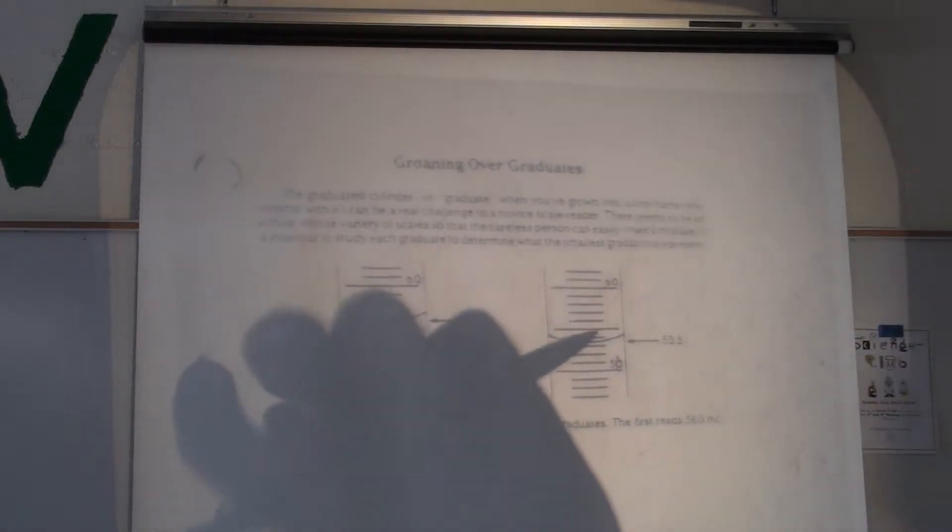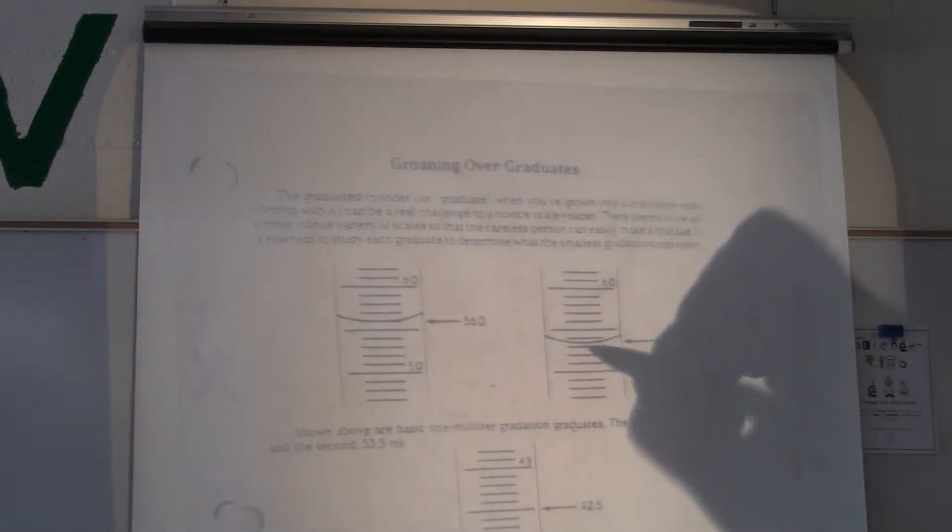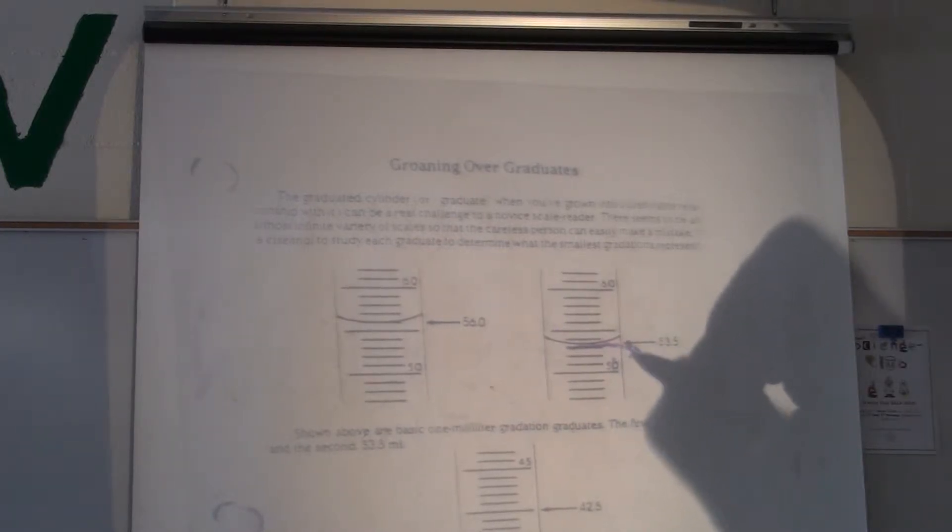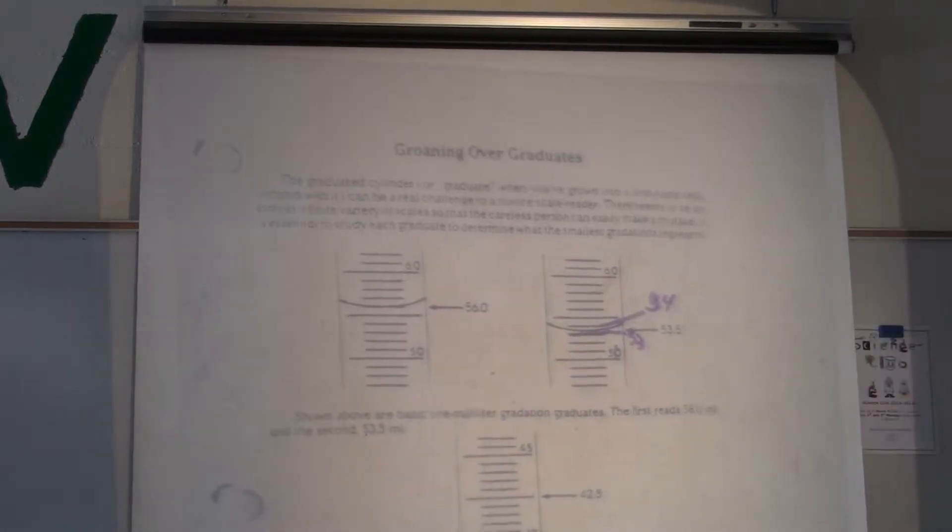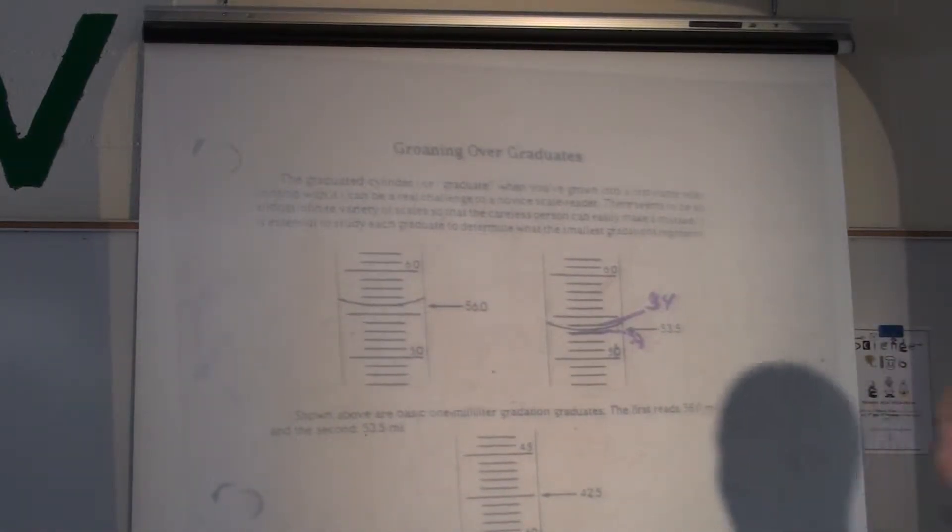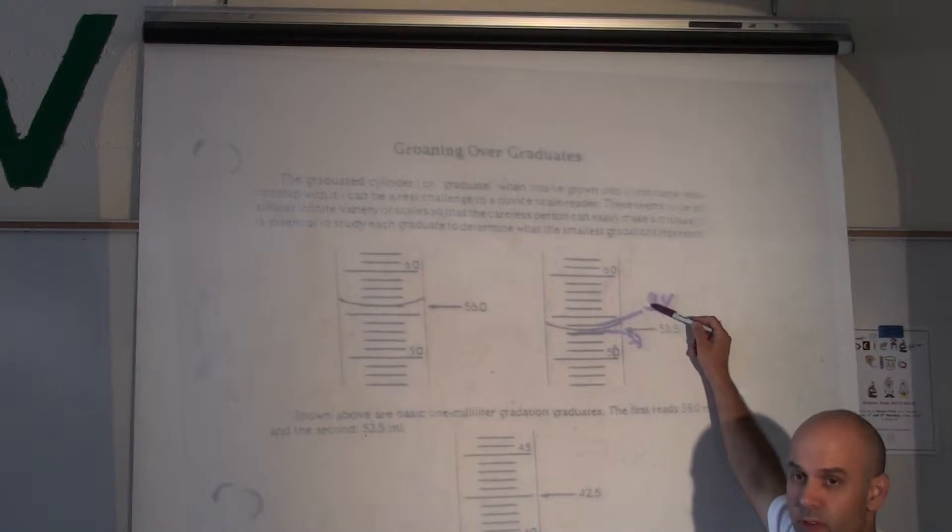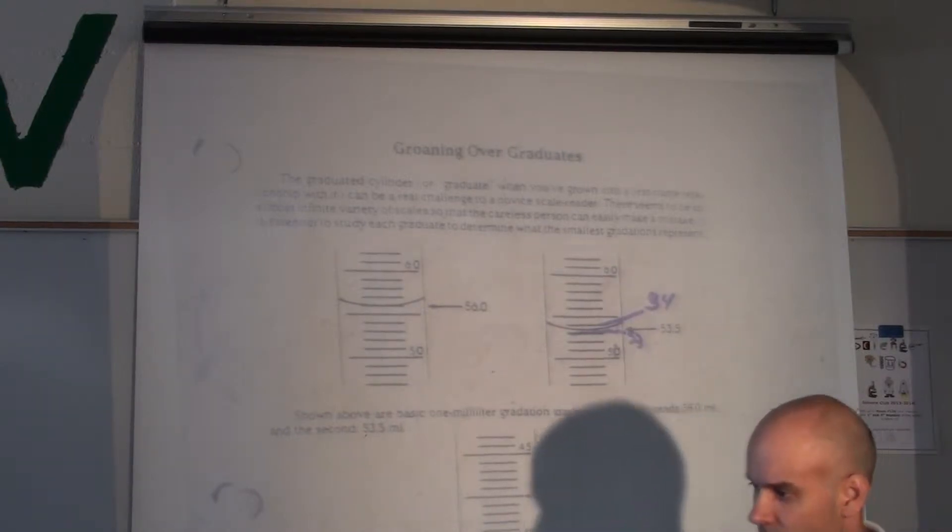So that's why with this graduated cylinder here, that's 53, and that's 54. And so we know that the meniscus is between 54 and 53, so then,